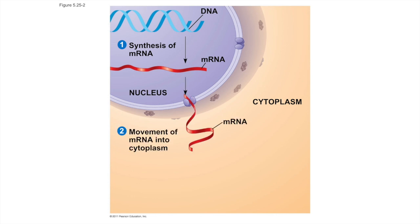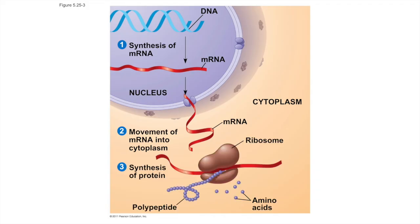The messenger RNA, or mRNA, leaves the nucleus and goes into the cytoplasm, which is the main room of the cell. In the cytoplasm, ribosomes — this hamburger bun looking thing — attach to the messenger RNA and start producing a polypeptide from amino acids. This idea of DNA making RNA and RNA making protein is called the central dogma of molecular biology, and we'll come back to this in unit 3.